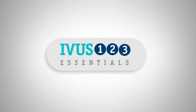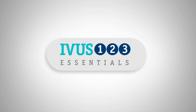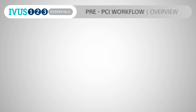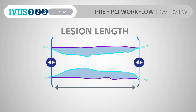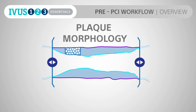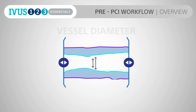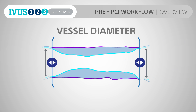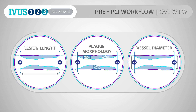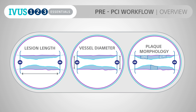IVUS 1-2-3. Gain critical insight as simple as 1-2-3. After the initial IVUS run, the pre-PCI workflow helps you assess the lesion length, plaque morphology, and vessel diameter in any order.